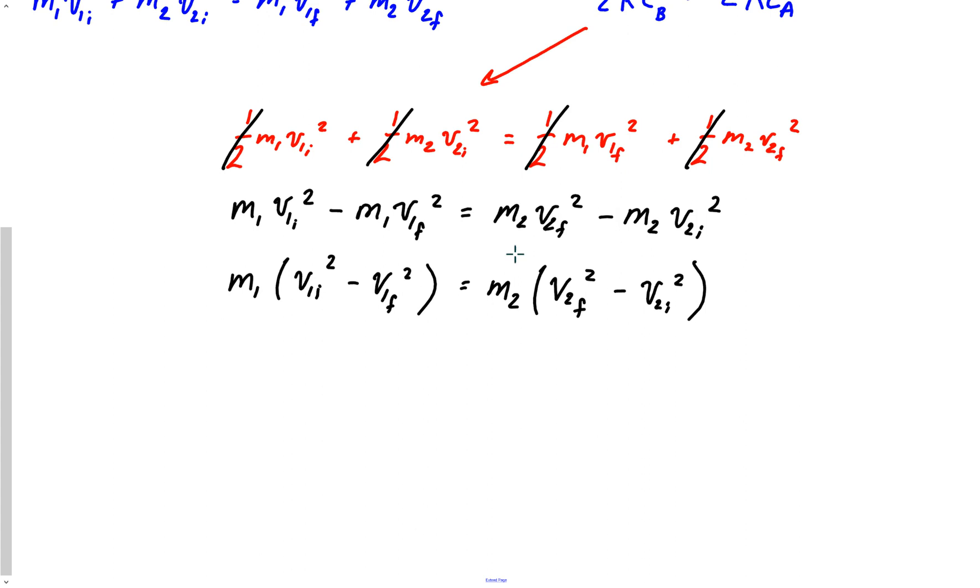So I'm going to have M1 times V1 initial squared minus V1 final squared equals M2, V2 final squared minus V2 initial squared. And so there I've factored those out. And now what I'm going to do is take a look at this difference of squares that's in here. So if you're looking at this, you should be able to be like, oh wait a minute, I know what this is. V1 initial squared minus V1 final squared. That's the same thing as M1 times V1 initial plus V1 final times V1 initial minus V1 final.